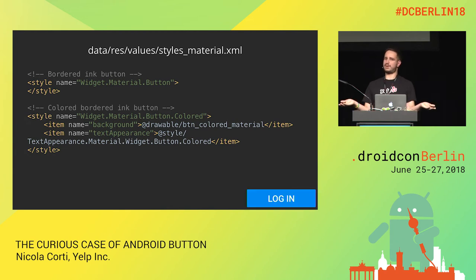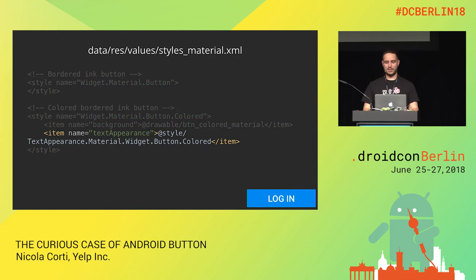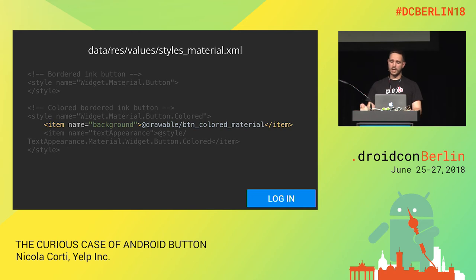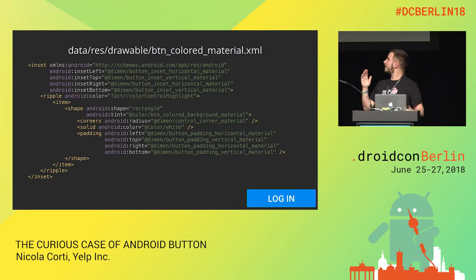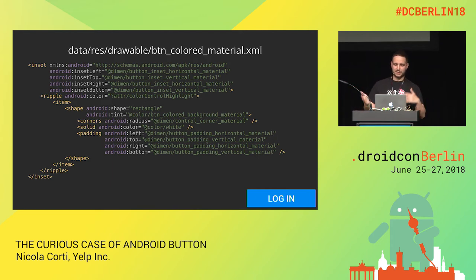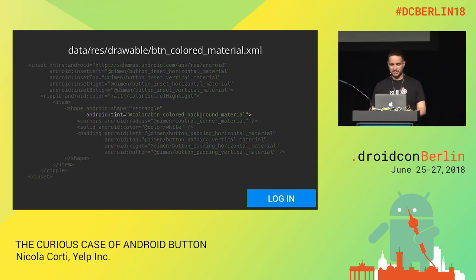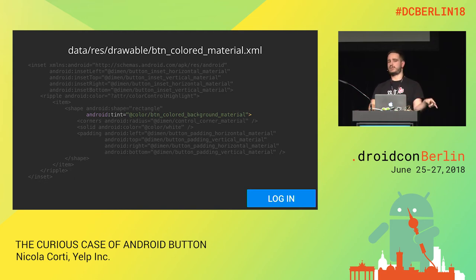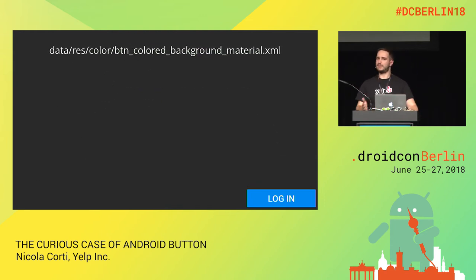We want to change just two things: the background and the text. We change the textAppearance to white and change the background to btn_colored_material. Opening that drawable file — it's a wall of code, but it's similar to the structure we saw before: ripple, item, inset, shape, corner, solid, and padding. The one notable difference is the tint for the shape: instead of colorButtonNormal (the gray color), it's now btn_color_background_material — and if you CMD+click there, you won't end up in a static color but in a file: btn_color_background_material.xml.